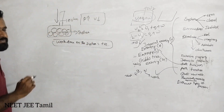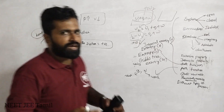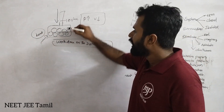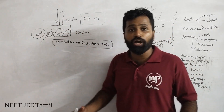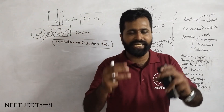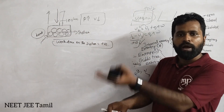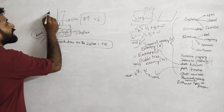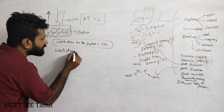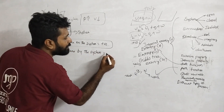Pressure increases, volume decreases. Heat — the gas molecules move randomly, creating pressure on the piston. The piston moves, expanding the container. Work is done by the system — negative sign. If work is done by the system, pressure and volume increase. Work done by the system is negative.